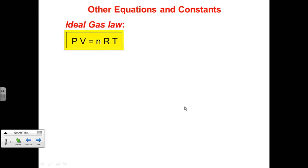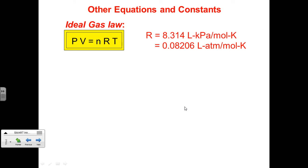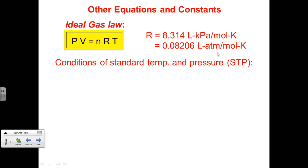The ideal gas law is derived from how gases behave. Pressure (P) is in atm, volume (V) in liters, n represents moles, and R is the gas constant. Depending on the units used, R is 8.314 for liters and kilopascals, or 0.08206 for liters, atm, moles, and Kelvin. A key staple: standard temperature and pressure (STP) is 0°C or 273 K and 1 atm.